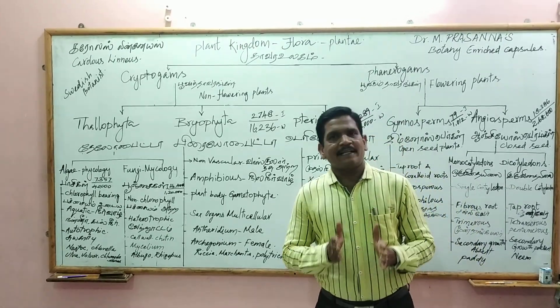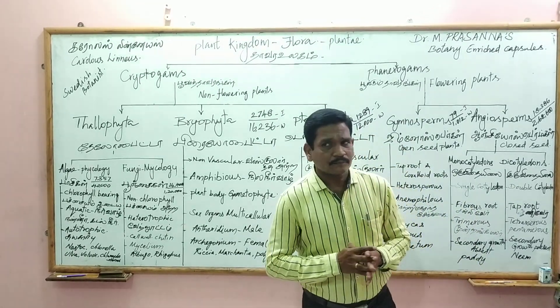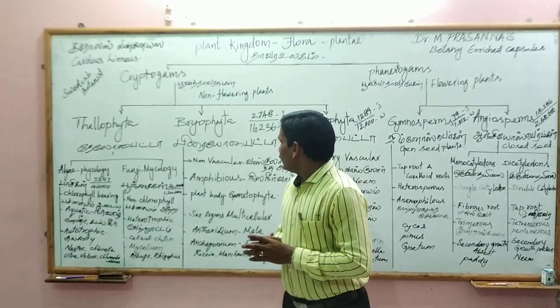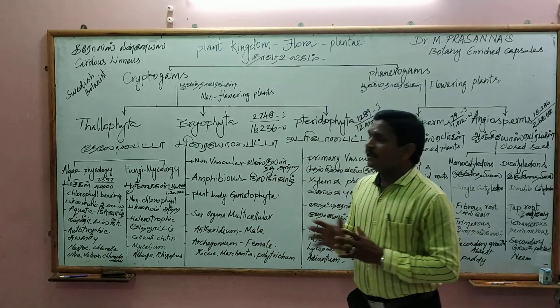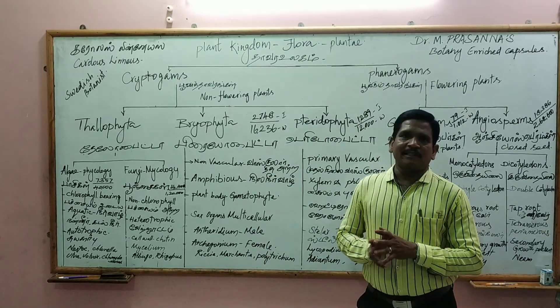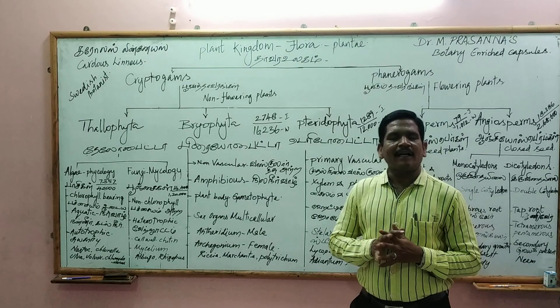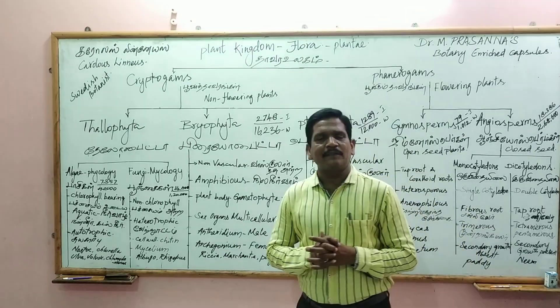Examples of Cryptogams include Riccia, Marchantia, and Polytrichum. In this group there are 14 to 20 chromosomes, and in some cases there are 24, and in others 30 to 40.